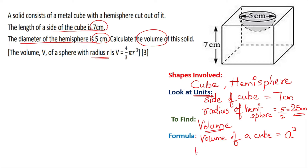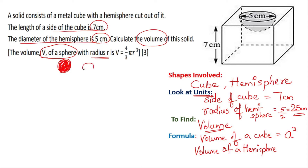Now the volume of a hemisphere — they have clearly given us the volume of a complete sphere. We just need half of it because we are dealing only with a hemisphere. So dividing by two, you can make the formula as (2/3)πr³. For those not comfortable deriving this, you can find the volume of a complete sphere and then divide it by two.